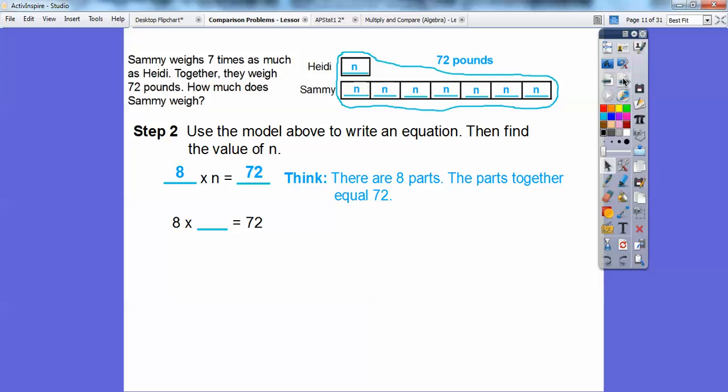So then ask yourself, what number times eight equals 72? And if you know your multiplication tables well, this is where it gets easier. So eight times nine equals 72, so let's answer the question now. The value of n equals nine. Be careful, n is not the answer.